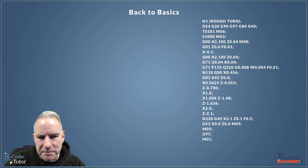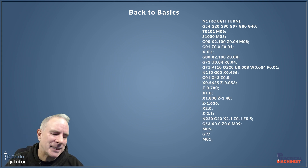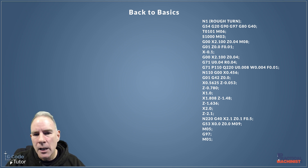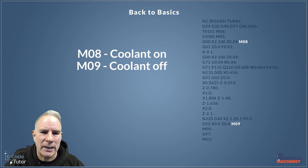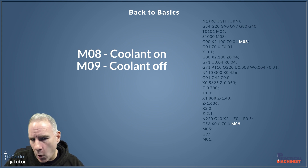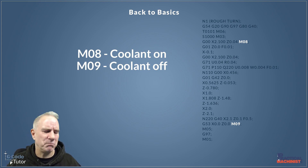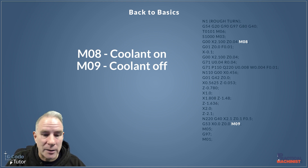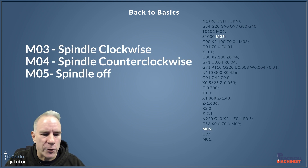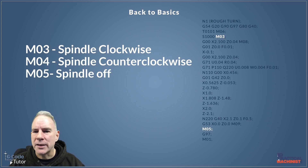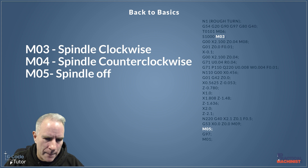Next up is M-codes. There are fewer standard M-codes than G-codes. The two in this example program are coolant on and coolant off — M08 and M09. If you've got flood coolant, mist coolant, or different types of coolant, you'll have different M-codes for these. Generally M08 turns them all on depending on the machine. We can also control our spindle with M-codes — turning the spindle on and off and running it forwards and backwards.